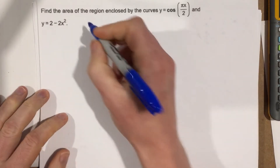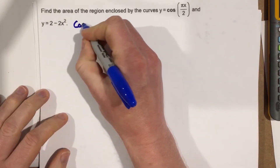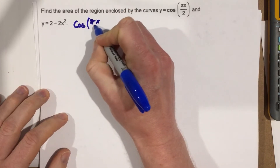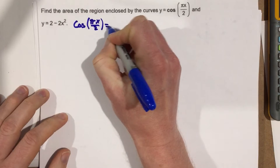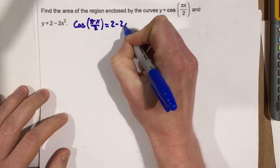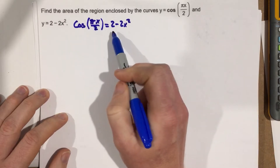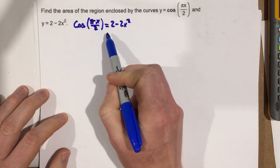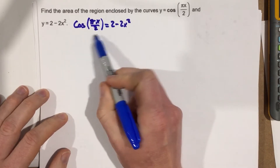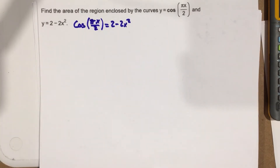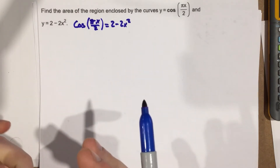When you set them equal, you get cosine of pi x over 2 equal to 2 minus 2x squared. I haven't found a way to solve this algebraically, but I figured out two methods to find their solutions.